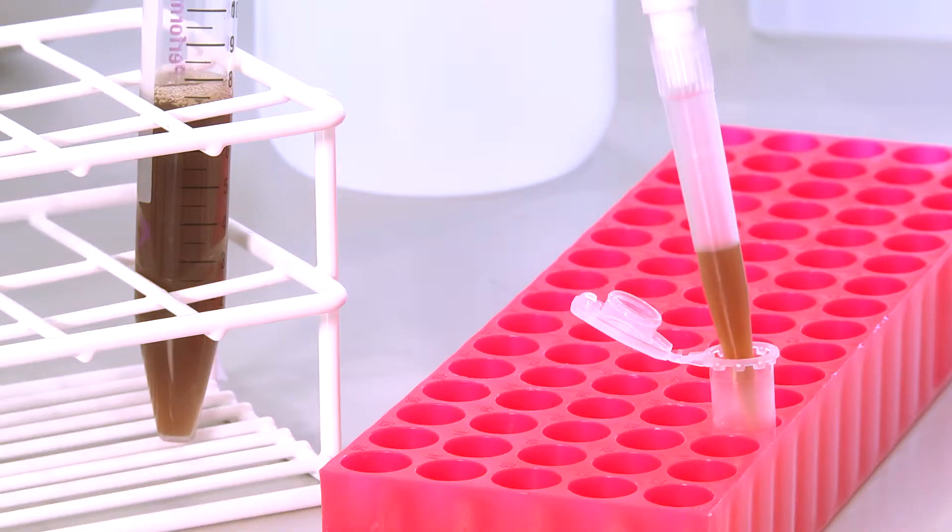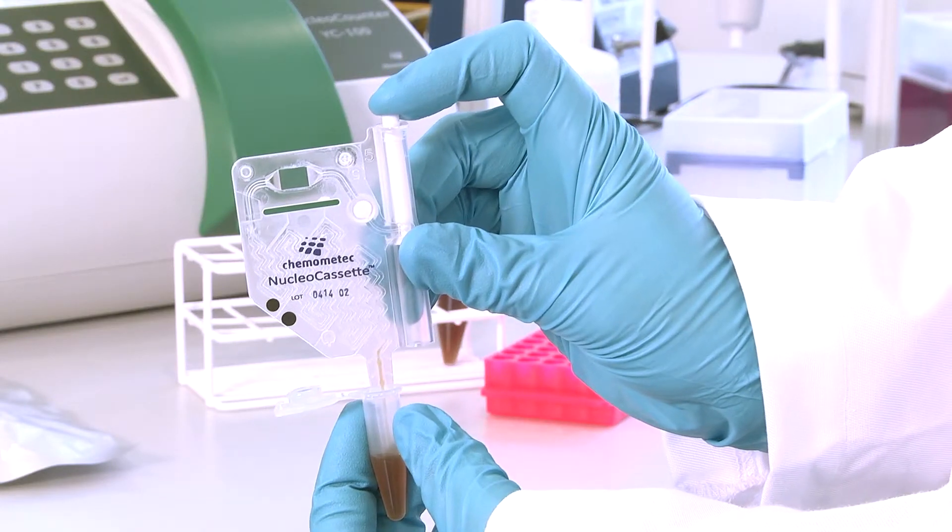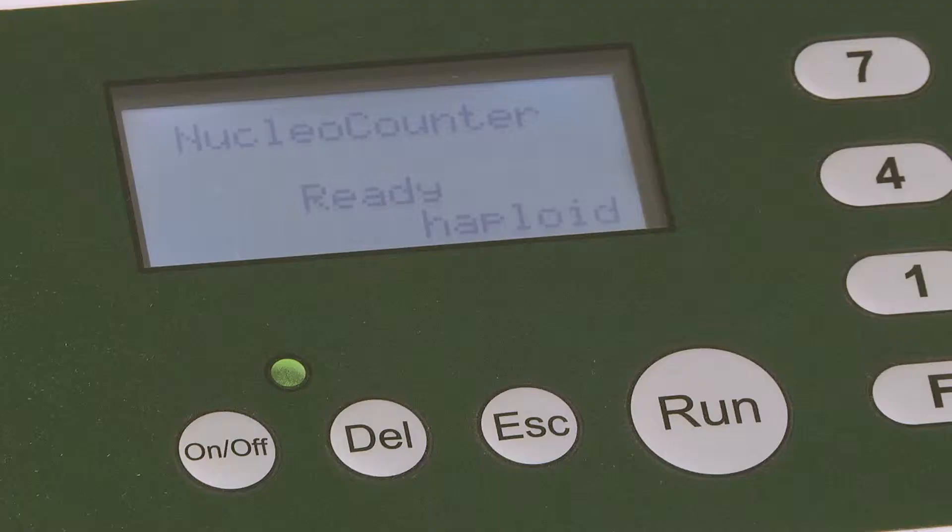Simply take a small sample of yeast, dilute with the supplied reagent, load the cassette, insert the cassette and press run. In 30 seconds the instrument shows the total cell count in the display.